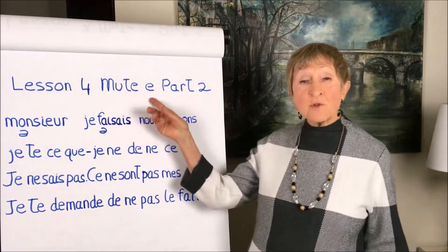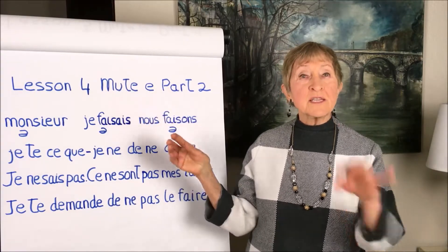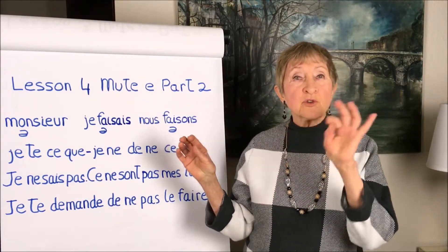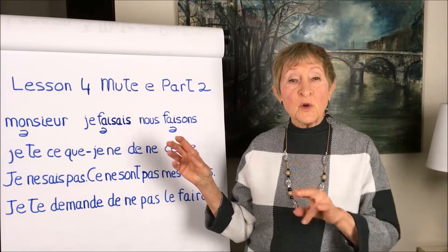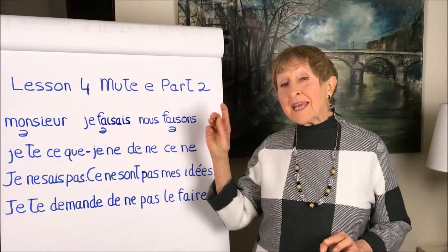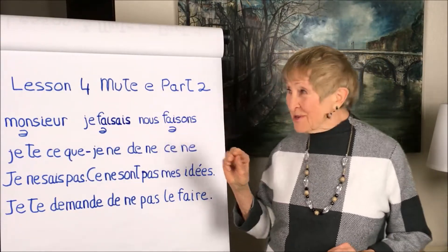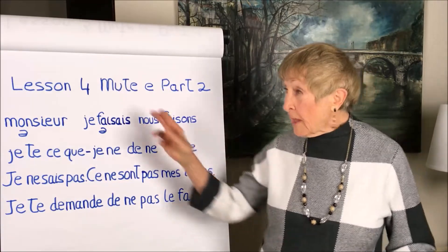In our last lesson we saw that usually the mute-e appears in little words like te, je, ce, que, ne, de, le, and all of those. But amazingly it is hiding out in a lot of other French words, and here we see a few examples of those.